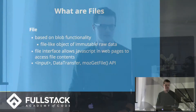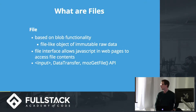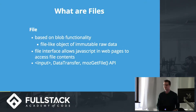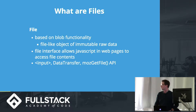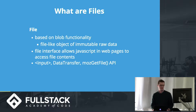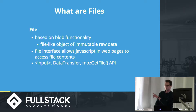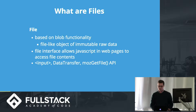When you're dealing with files you often see this word 'blob.' A file is actually based on the blob functionality. A blob is a file-like object of immutable raw data, and a file is just built on top of that. A file has an interface that allows JavaScript in web pages to access file contents. The way you normally do it is with an input tag, but there's a few others — data transfer and other APIs — but today we're going to talk about the input tag.